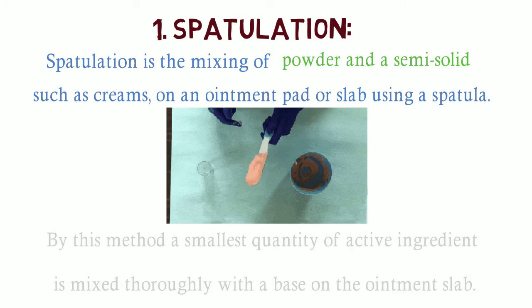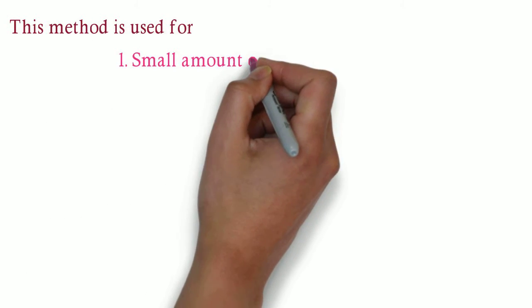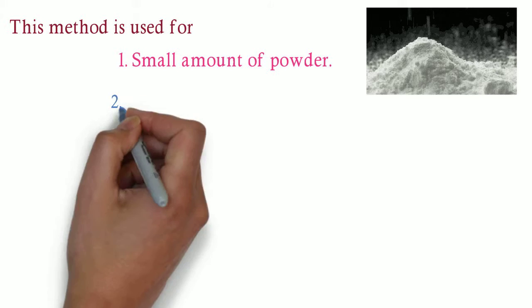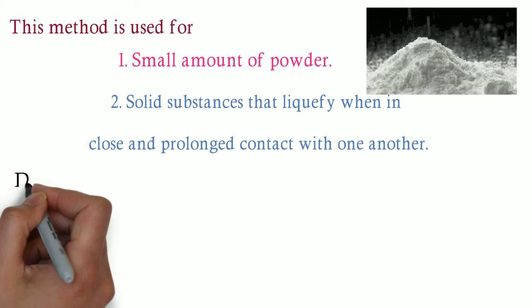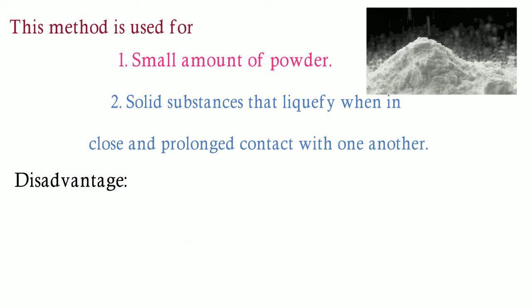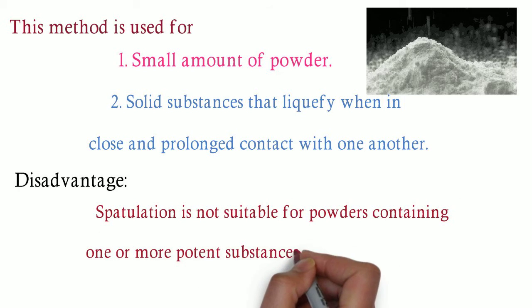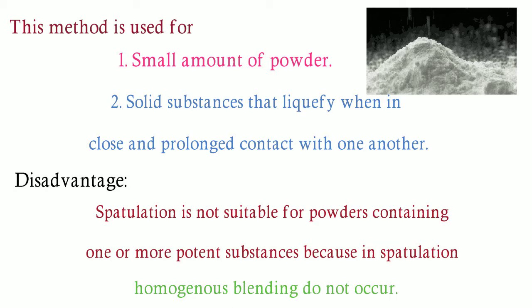By this method, a smallest quantity of active ingredient is mixed thoroughly with a base on the ointment slab. This method is used for: one, small amount of powder; two, solid substances that liquefy when in close and prolonged contact with one another. Disadvantage: spatulation is not suitable for powders containing one or more potent substances, because in the spatulation process, homogeneous blending does not occur.